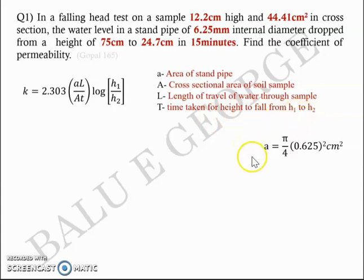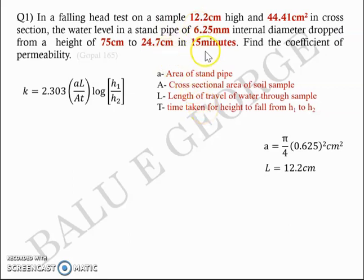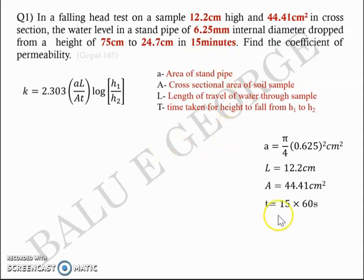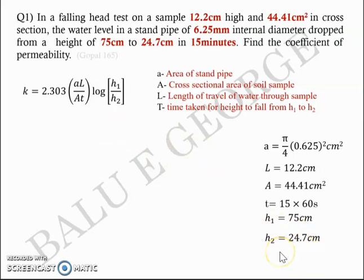First, we need to get small 'a', which is equal to (π/4)·d². The diameter d is given as 6.25 mm, so converting that to cm, substitute in this equation. The length of flow L is 12.2 cm, which is the height of the sample. The cross-sectional area A is 44.41 cm². Time is given as 15 minutes, so convert to seconds by multiplying by 60. h1 is 75 cm and h2 is 24.7 cm.